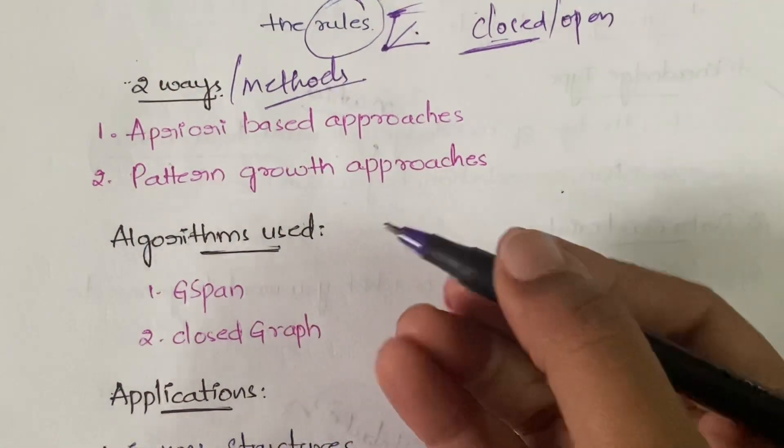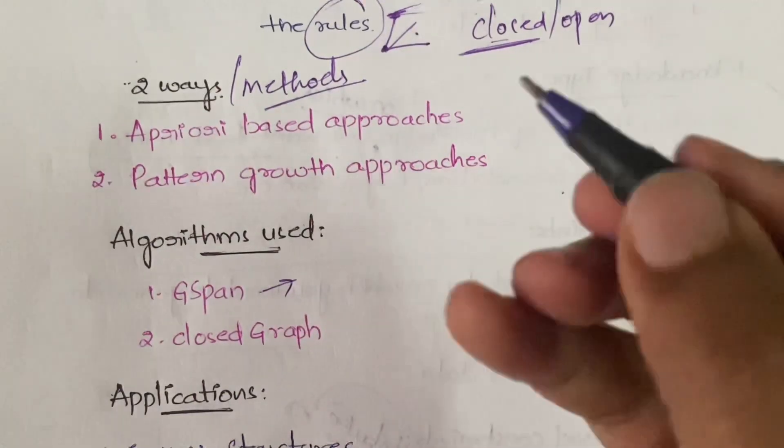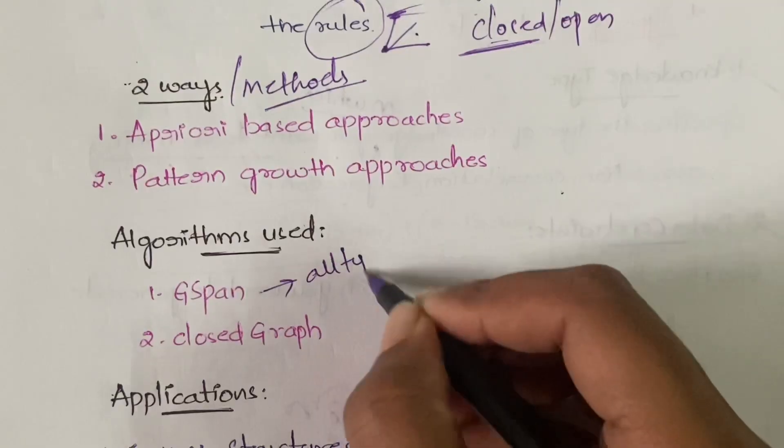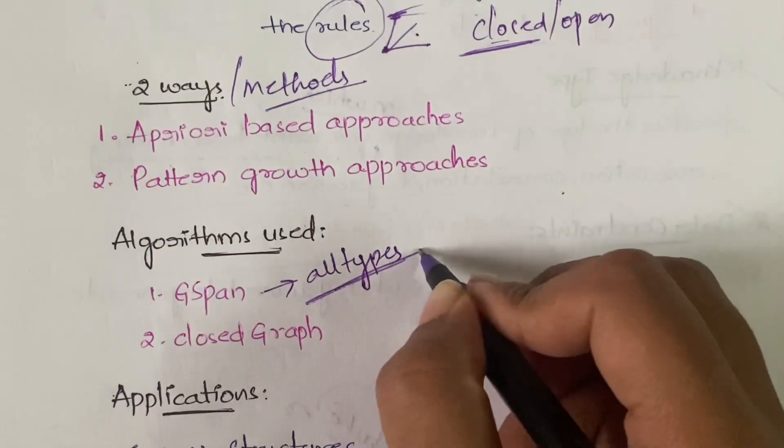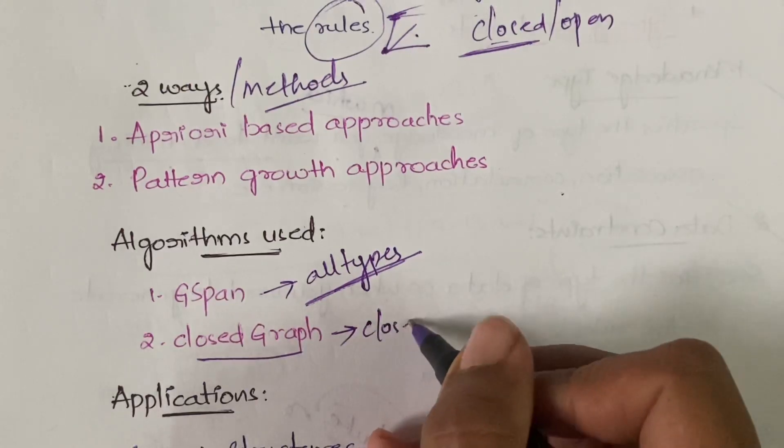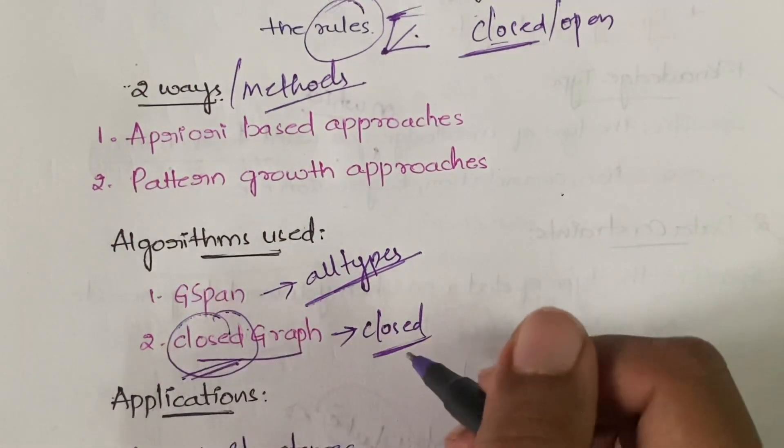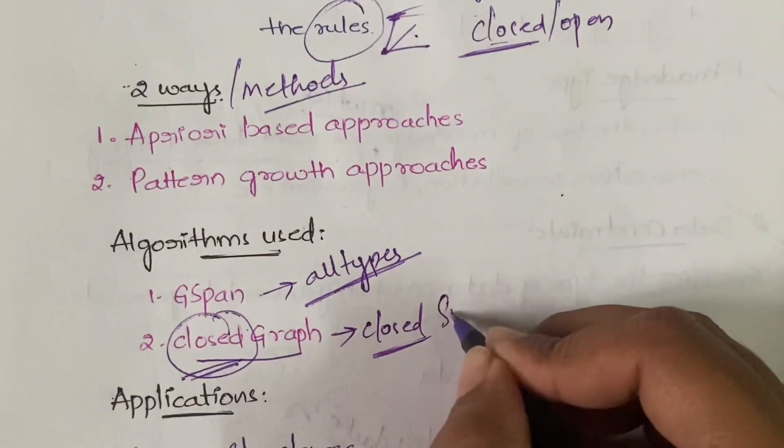G-span is used for all types of graphs - you can use this G-span algorithm for all types of graphs. Whereas this closed graph algorithm can be used only for closed graphs, as the name itself indicates. It can be used only for closed subgraphs, whereas you can use G-span algorithm for all types of graphs.